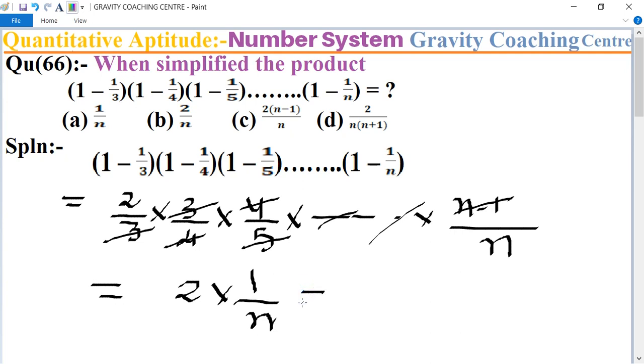This equals 2 upon n, which is the required answer. So option B is the correct answer.